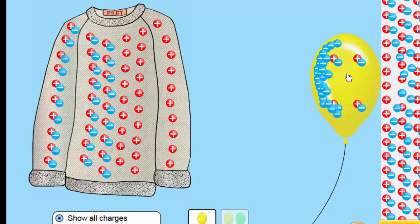The positive charges on the wall are closer to the balloon than the wall's negative charges. Again the wall is neutral. So the negative charges here are equal to the positive charges. But the distance will tip the balance here and cause attraction.